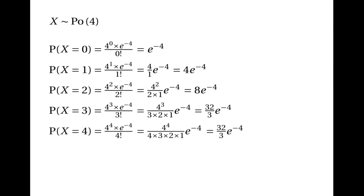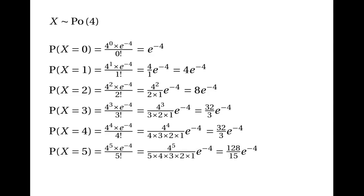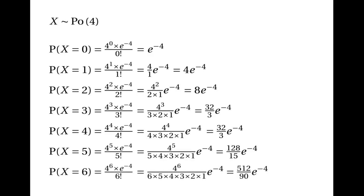The probability that x is equal to 4, if you do the calculation, also turns out to be 32 over 3 times e to the power of minus 4. The probability of having 5 events is 128 over 15 times e to the power of minus 4, and the probability of having 6 events is 512 over 90 times e to the power of minus 4.